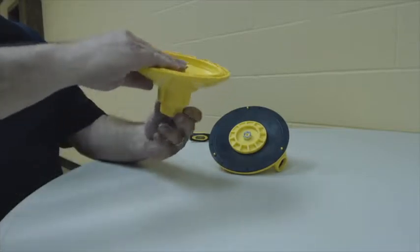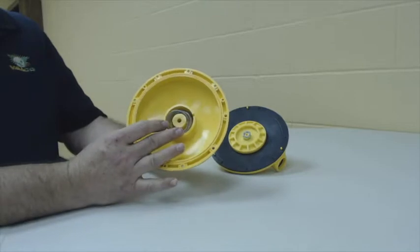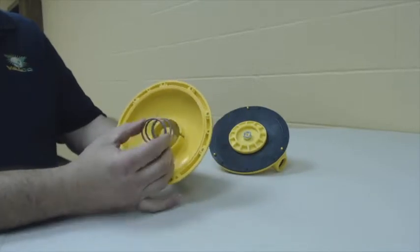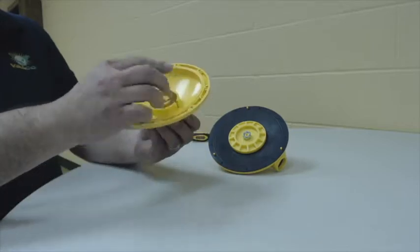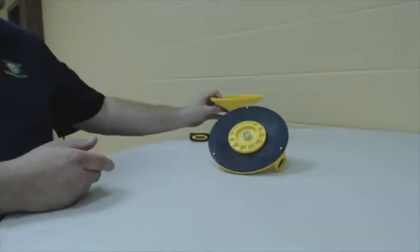The bottom portion is our adjuster knob with a spring inside. You want to make sure the spring is clear, not rusted, corroded, or anything like that, and then make sure that's good and you can set that to the side.